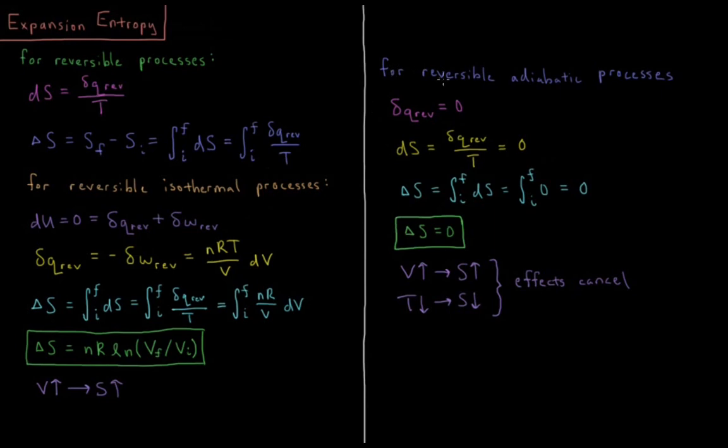By contrast, for reversible adiabatic processes, the heat equals zero. So dS being dQ_rev over T equals zero over T, which will be zero.